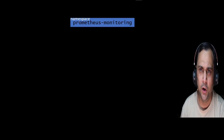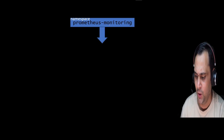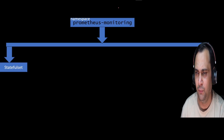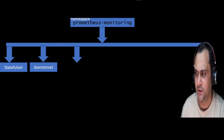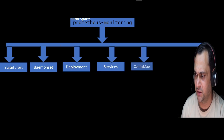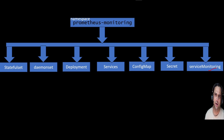We will create one new namespace called `prometheus-monitoring`. Inside this namespace, various objects will be deployed. For example, a StatefulSet comes by default with the Prometheus stack; a DaemonSet is also used. It will create Deployments, Services, ConfigMaps, Secrets, and also ServiceMonitor — which is a CRD we will cover later.